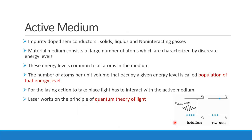Active medium — when we learn about laser action, the active medium is the material in which laser action takes place. It may be a semiconductor, solid, liquid, or non-interacting gas. For example, a nitrogen laser uses nitrogen gas as its active medium. There are four types of lasers depending on the type of active medium: semiconductor laser, solid-state laser, liquid laser, and gas laser.